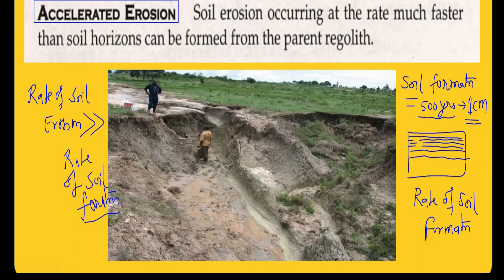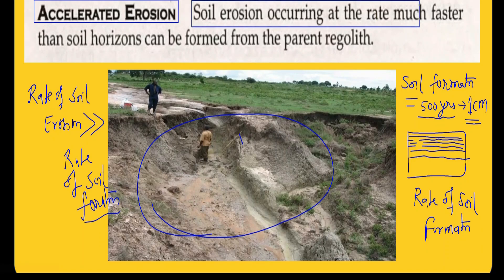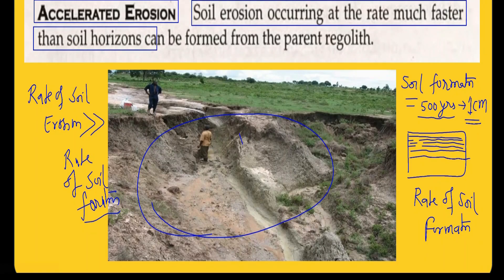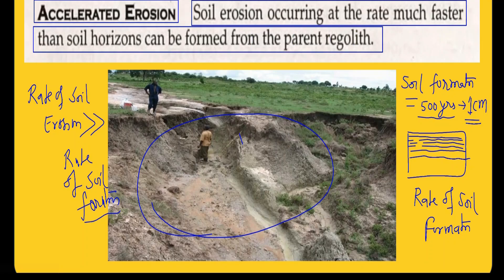This whole region is affected by accelerated erosion — the soil horizon has become very thin while erosion is very high. Accelerated erosion means soil erosion occurring at a rate much faster than soil horizons can be formed from the parent regolith, meaning the parent rock that keeps breaking down to form soil.